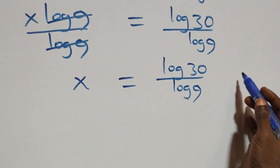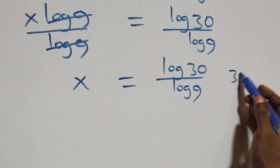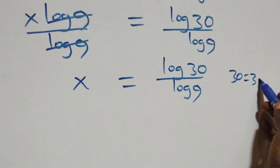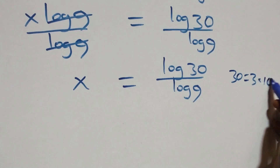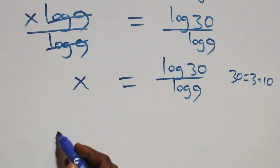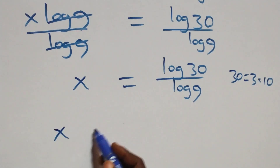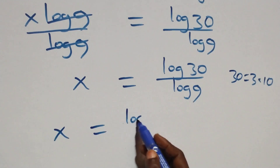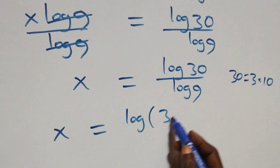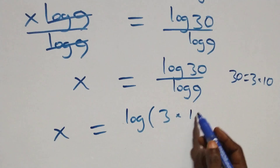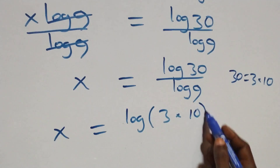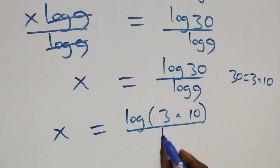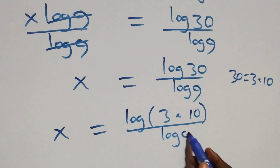Then here, we can write 30 as 3 times 10. So what we have here becomes x equals to log(3 times 10) over log 9.